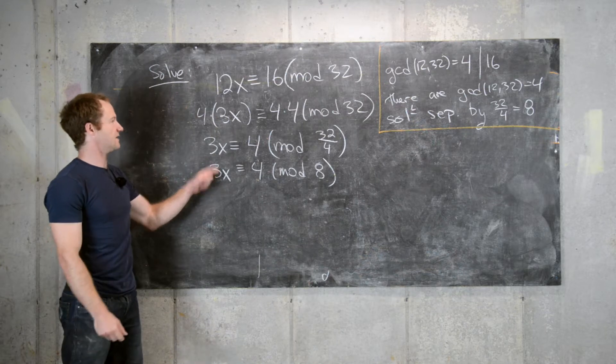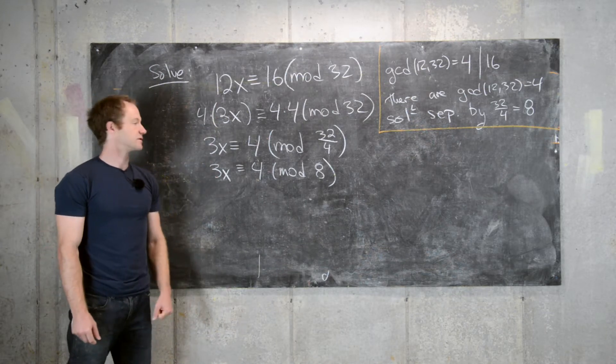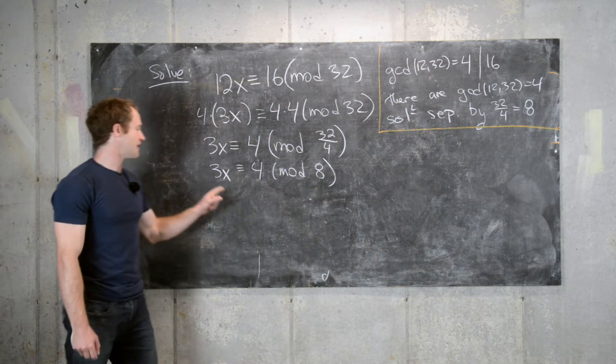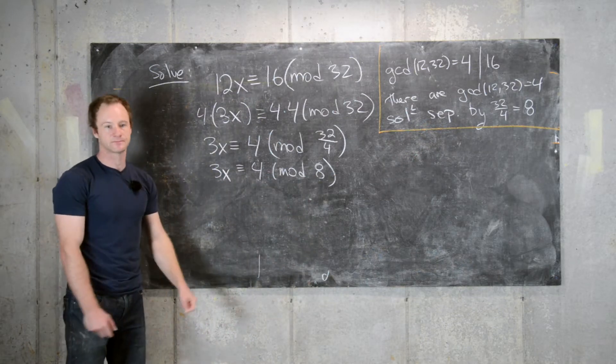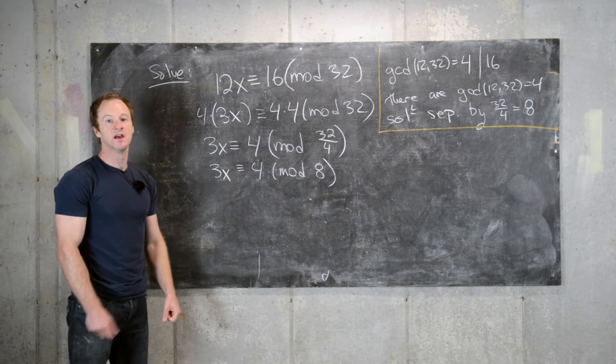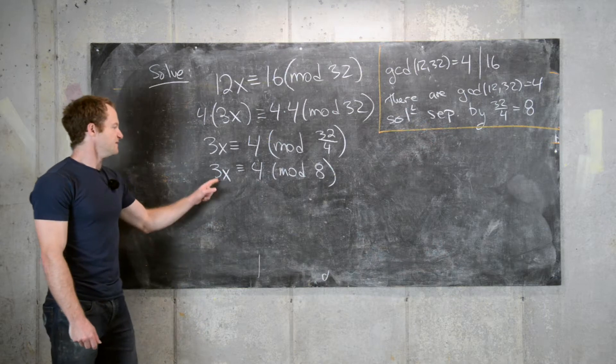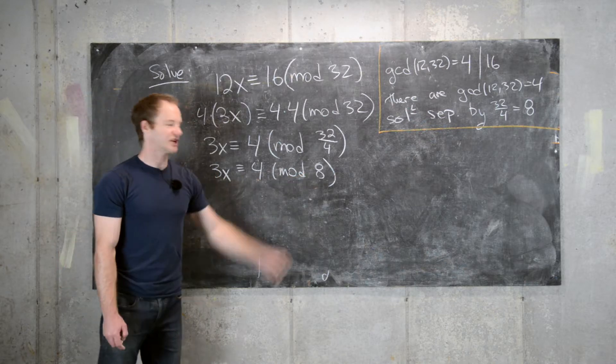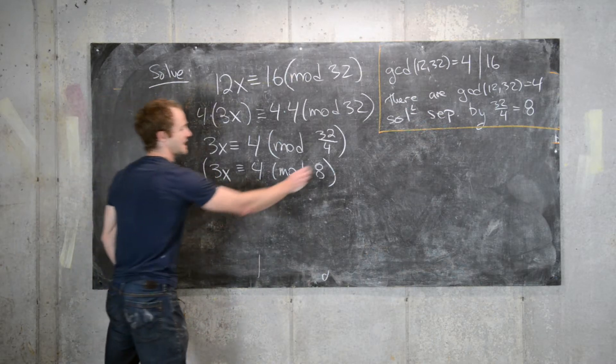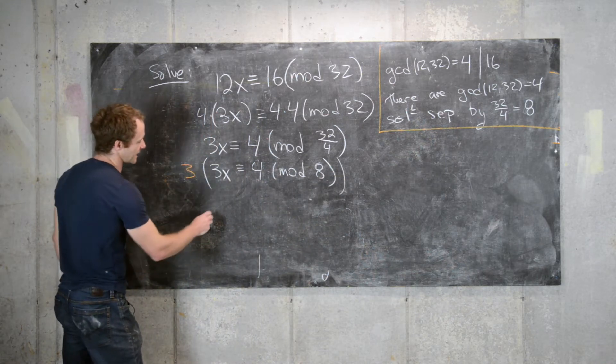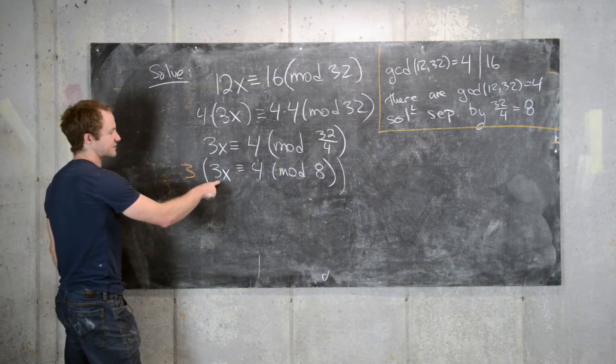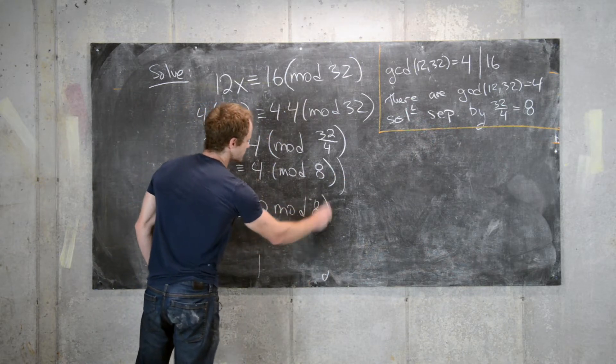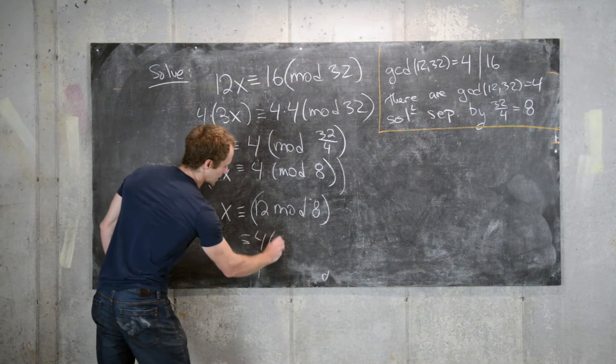Well, that's not equivalent to this, but if we solve this, then we have solved this linear congruence. Now what we notice is that 3 is relatively prime to 8, so that means 3 has an inverse modulo 8. Now we can use the extended Euclidean algorithm to find this inverse, but since 8 is pretty small, we can guess and check. So 3 times 2 is 6, that's not 1 mod 8. 3 times 3 is 9, which is 1 mod 8. So what we can do is take this whole linear congruence, multiply by 3, and we'll get 3 times 3 is 9, which is 1 mod 8, which means we get x is congruent to 12 mod 8, which is congruent to 4 mod 8.